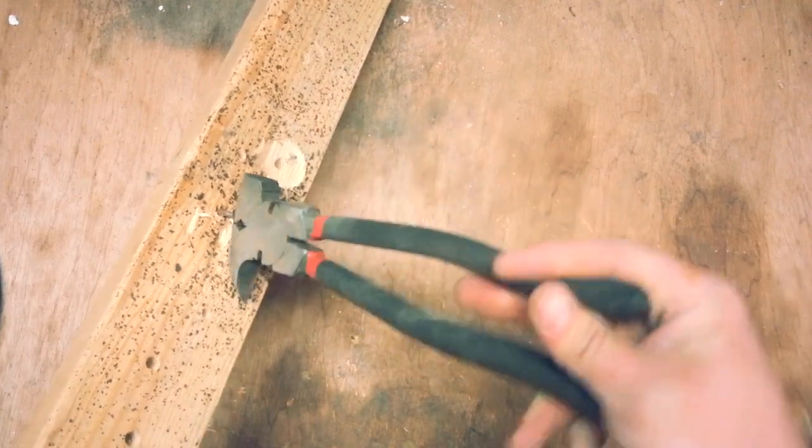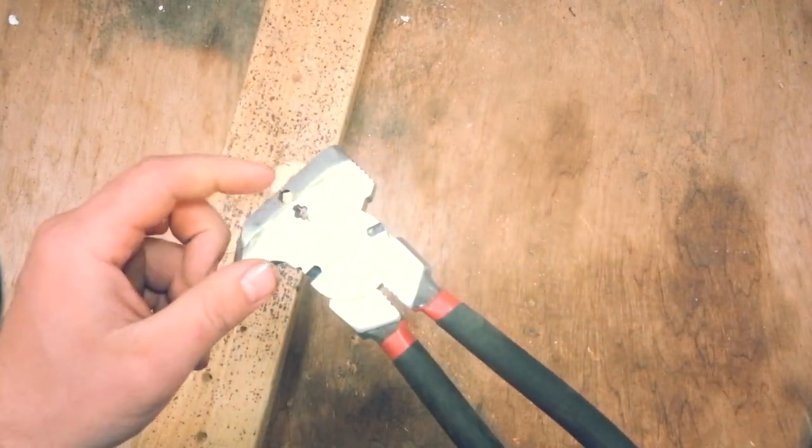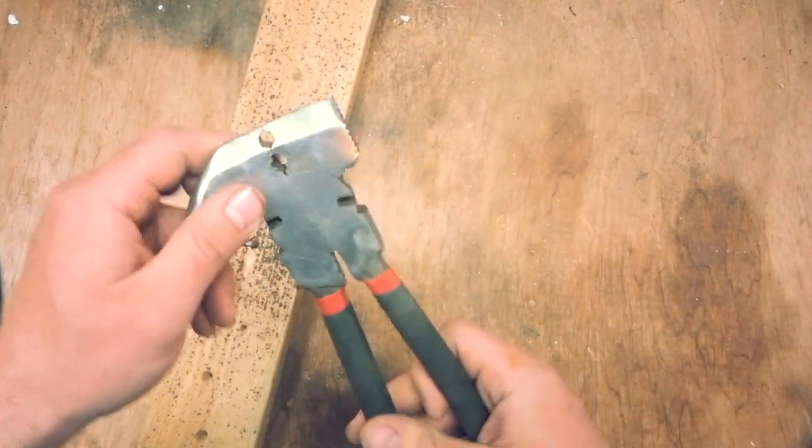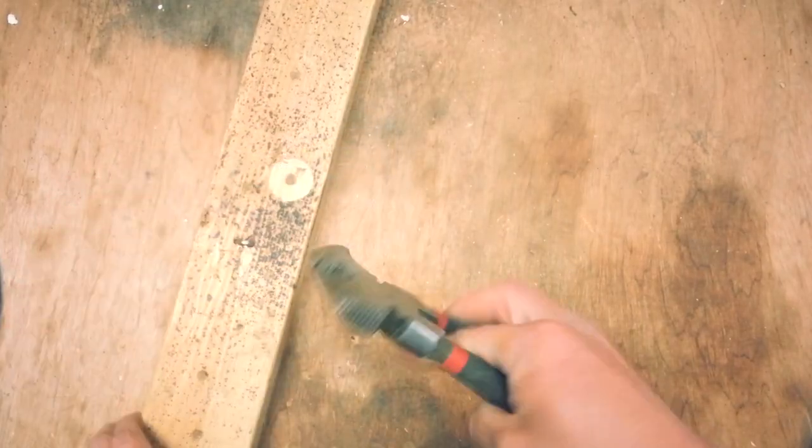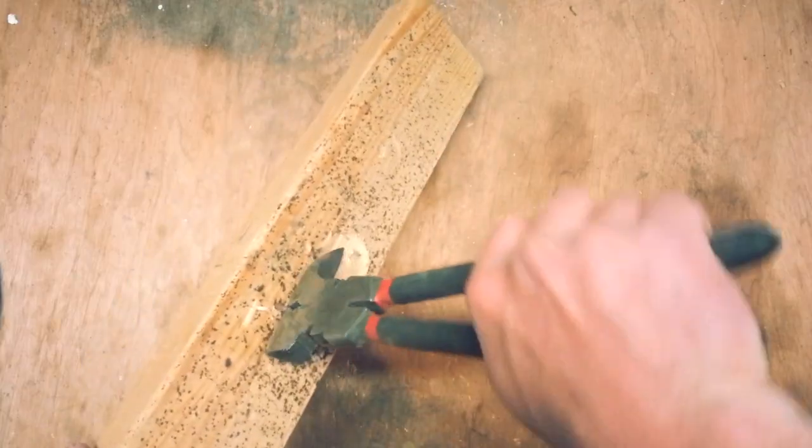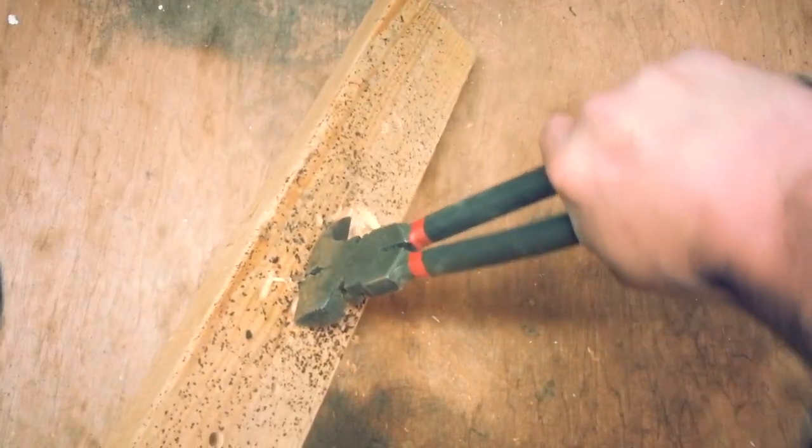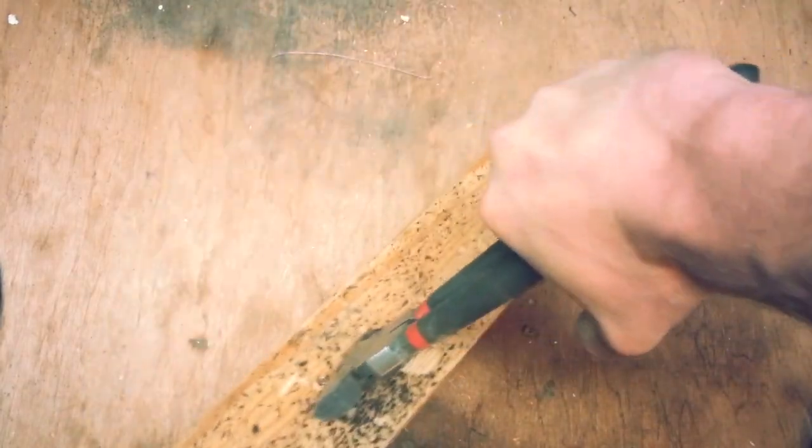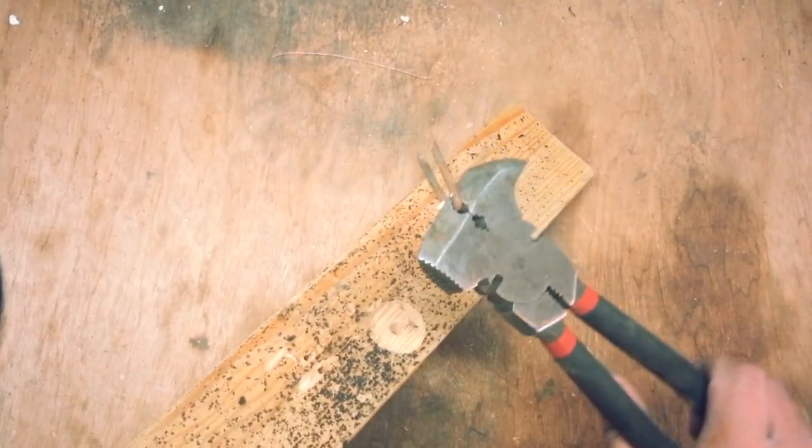The easiest way to pull though, is by using this first hook, this first hook at the top. After it's far enough out that you can pinch it and grab it, you pinch it and it'll pull right out. Try doing that with a claw hammer, it'll never come out.